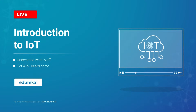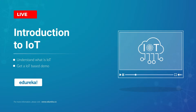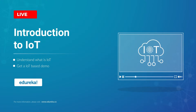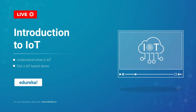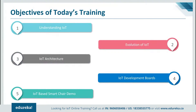Hey guys, this is Bharani from Edureka. In today's training session we'll understand why the Internet of Things is the next big revolution. We'll start off by understanding what exactly is Internet of Things, then look at the evolution of Internet, go through the IoT architecture, look at the different development boards used for IoT, and finally implement the concept of smart chair using Raspberry Pi 3.